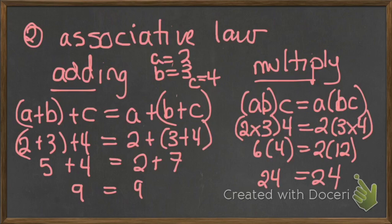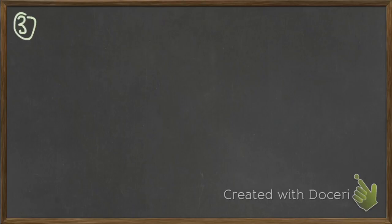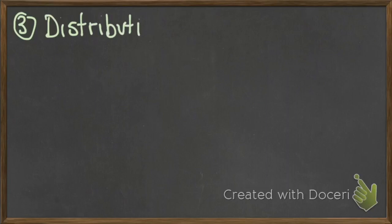That is the associative law. Remember, we're only dealing with just adding or just multiplying — no other operation will this work. And finally, the last property that we're going to look at, and it's probably one of the most important ones too, is called the distributive property, or the distributive law.